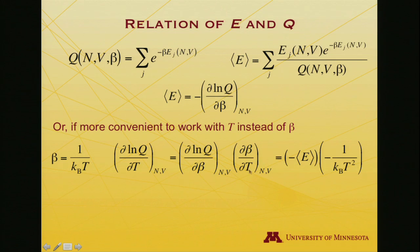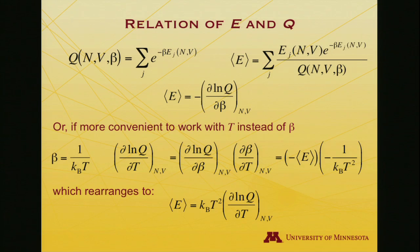I already know partial log Q partial beta—that's minus the expectation value of the energy. I know partial beta partial T because it's 1 over kT, so the derivative with respect to T is minus 1 over kT squared. I can then rearrange that. The two negative symbols cancel out, and I get that the expectation value of the energy equals kT squared partial log Q partial T, with N and V held constant.